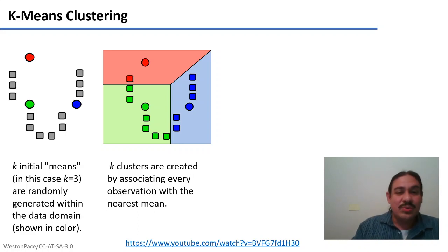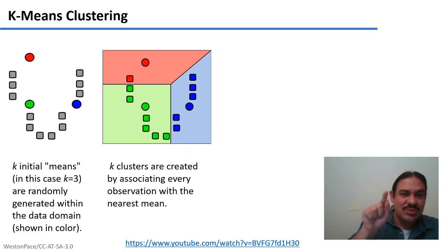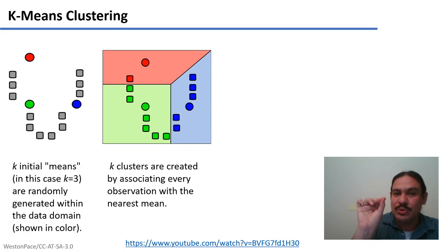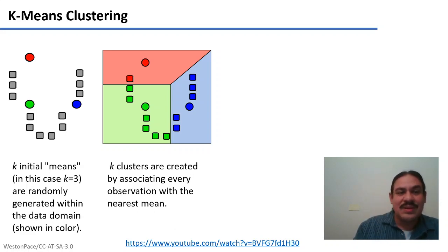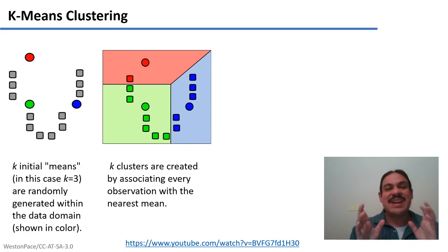There are six data points associated with the green center, and five blue data points associated with the blue center. Notice that this initial clustering doesn't match the intuition we had at the beginning, but again, this is just a random start.